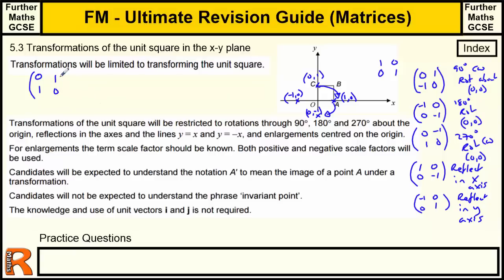If you want y equals minus x, which is the diagonal line going the other way, a line going down that way. Where do the points go? A comes down to here and C goes over to there. So A goes down to 0, minus 1 and C goes to minus 1, 0. So that's a reflection in y equals minus x.